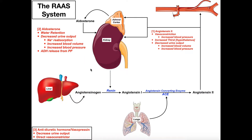In several of the previous videos, in particular where we talked about the juxtaglomerular apparatus, we mentioned that there was a protein released by the kidneys, specifically the juxtaglomerular cells or granular cells, called renin. We briefly mentioned something called the RAAS system, and in this video we're going to talk about what that is. RAAS stands for renin-angiotensin-aldosterone system, and this is a system of renin release which triggers the formation of angiotensin II, and then the release of a hormone called aldosterone.